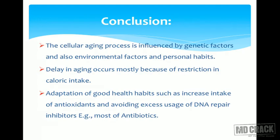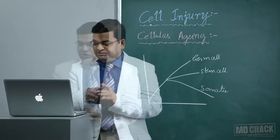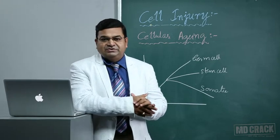In conclusion, the cellular aging process is influenced by approximately 60% genetic factors and 40% environmental factors — including lifestyle, personal habits, and dietary intake. Daily intake of antioxidants is considered protective against aging. Restriction of calorie intake can delay aging — eat less, live more. Good health habits include increased antioxidant intake and avoiding unnecessary use of agents that can hamper DNA repair. That concludes the topic of cellular aging.